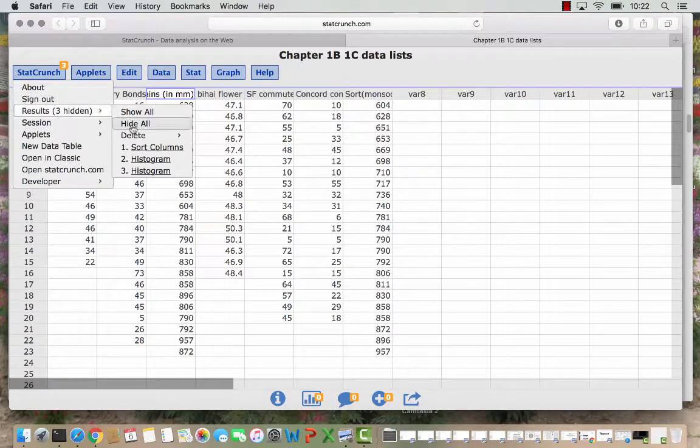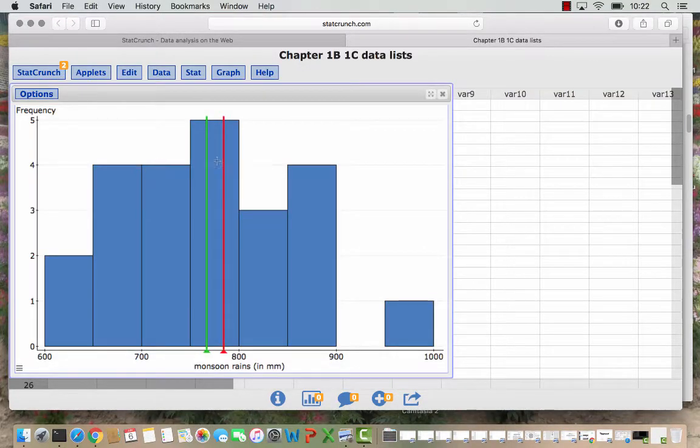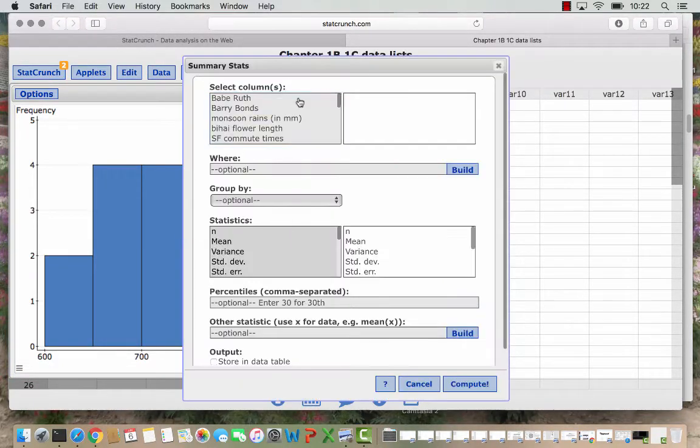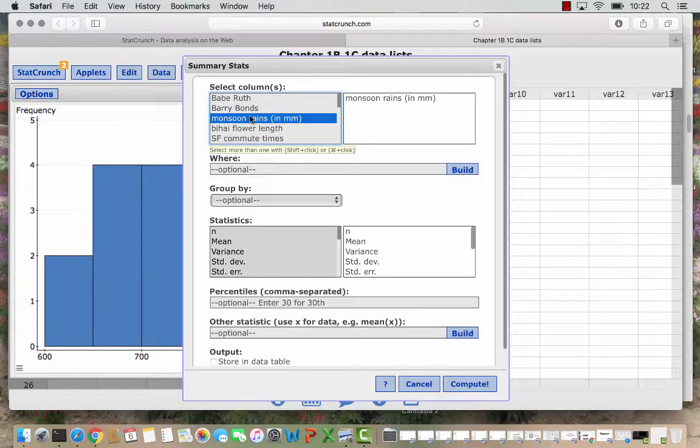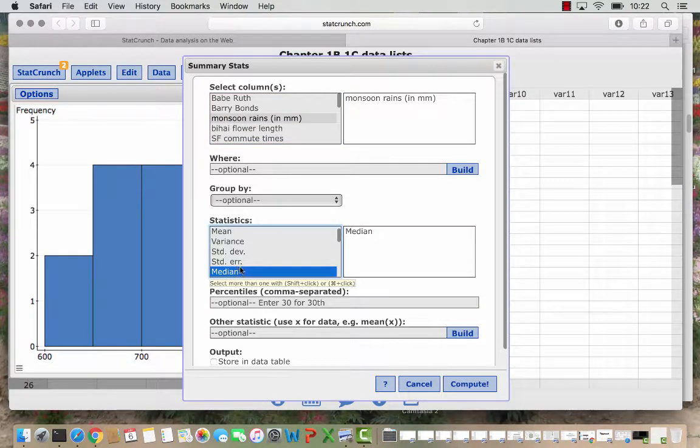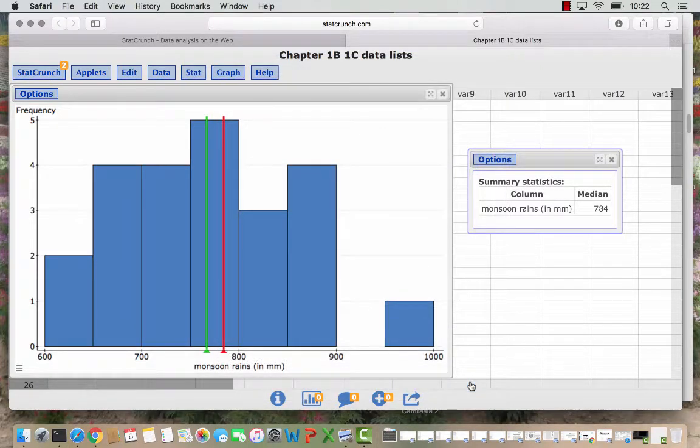If we go back to results and pull up that histogram, if I hover my mouse over the red line, the red marker, we see the median is 784 millimeters. So either way putting the marker on the graph, sorting the data, or a third way is if you go to stat, summary stat, choose columns, monsoon rains, and then we can select not everything, we'll just select the median and compute and here's yet another calculation. Our median is 784 millimeters.